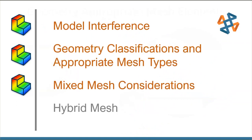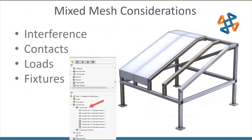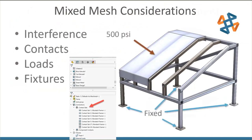Now I want to talk about a mixed mesh consideration — when we bring all three geometry types together. The part we're looking at is a frame. On the bottom are solid feet that the beams will be tied to. There's a sheet metal cover over the top, and we'll assign 500 psi to the sheet metal component and fix the feet. Some very important things when dealing with a mixed mesh: first, check for interference — just as with an individual part or assembly, you have to check for interference in a mixed mesh as well.